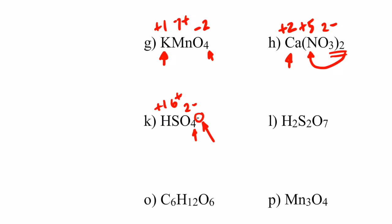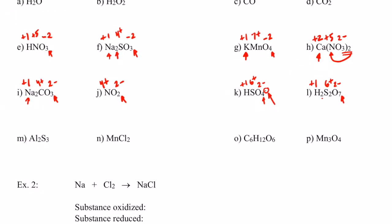For H2S2O7: oxygen is negative two, and seven oxygens give fourteen negatives. Hydrogen can only be positive one, so two hydrogens give two positives. That leaves twelve more positives needed, split between two sulfurs, so each sulfur is positive six — and we know from the previous example that sulfur can be positive six.